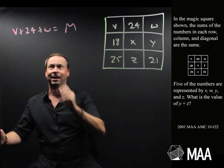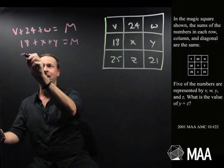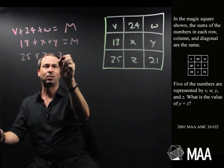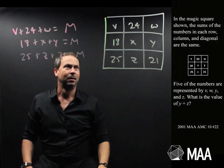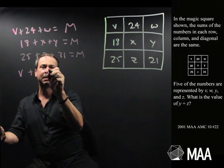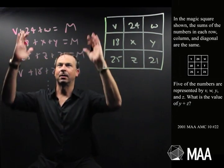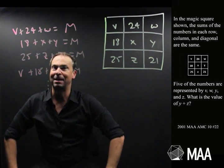And I could keep going. 18 plus X plus Y equals that M again. And 25 plus Z plus 21 equals that M again. Or I could start doing some columns. V plus 18 plus 25 equals M. And I guess I could keep going and get a whole system of equations and maybe work things out.